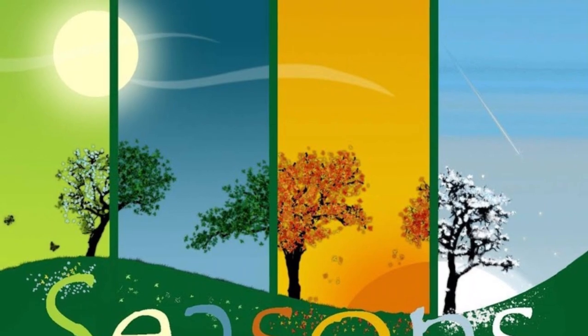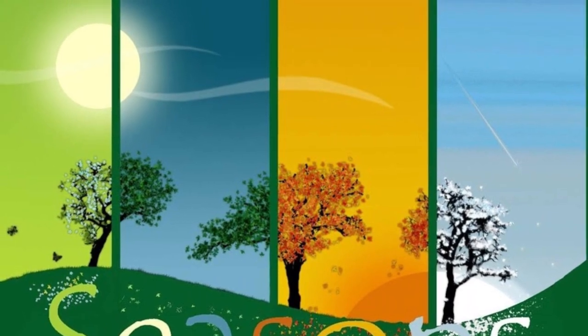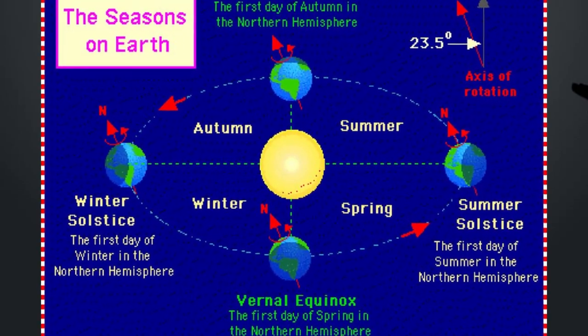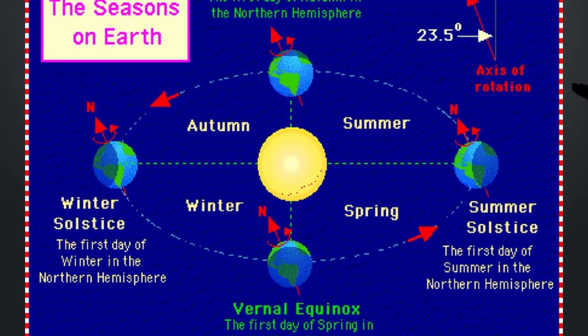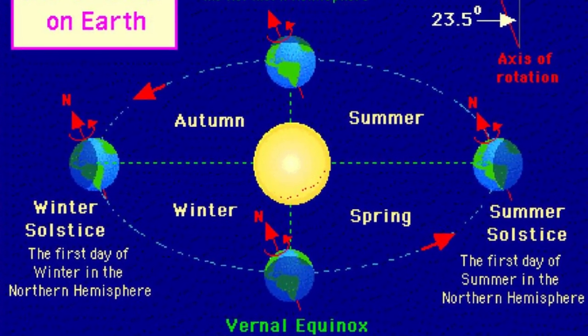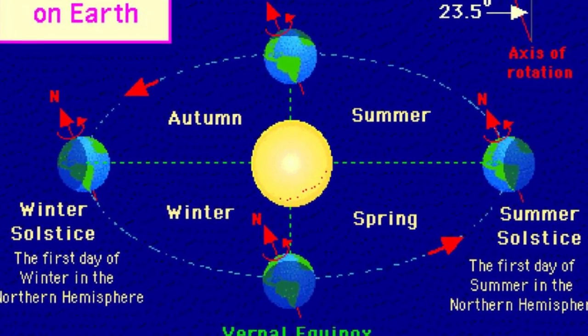When the North Pole tilts toward the Sun, it's summer in the Northern Hemisphere. When the South Pole tilts toward the Sun, it's winter in the Northern Hemisphere.